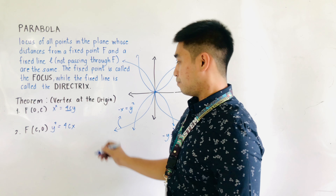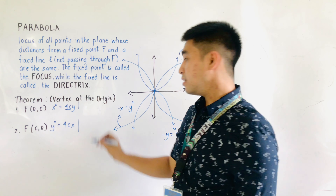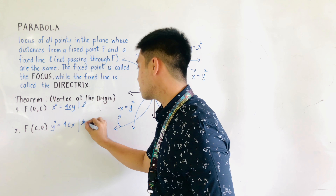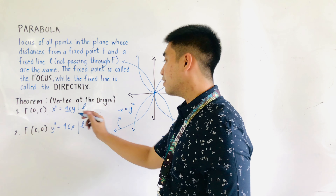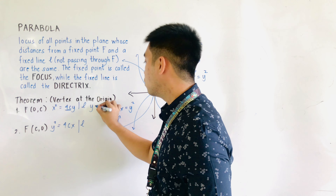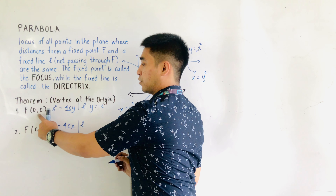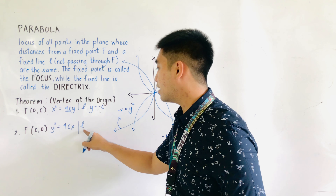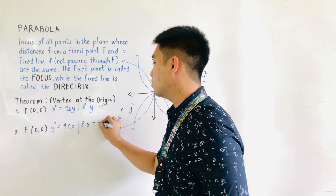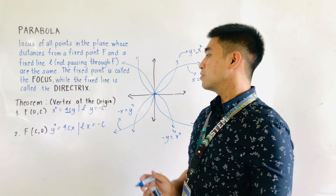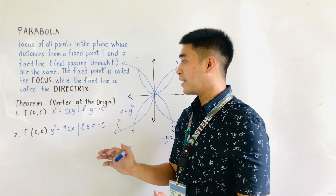What if we are now asked to get the directrix? If we have x squared in the equation, the directrix is y is equal to negative c — it is just the opposite of the y value. And for the second theorem where we have y squared, the directrix is x is equal to negative c.